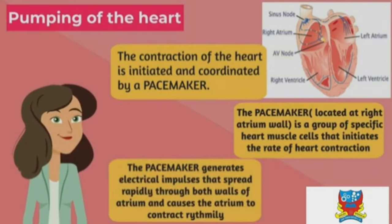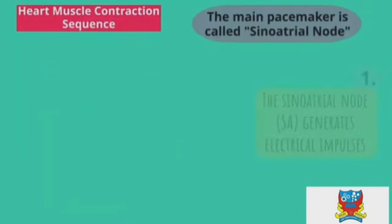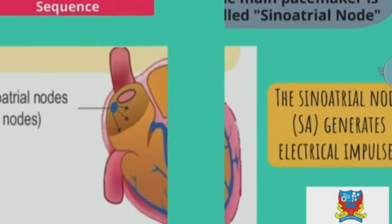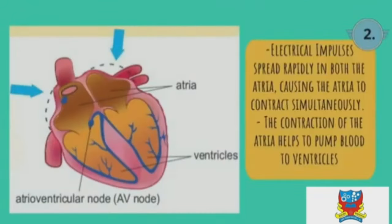The pacemaker generates electrical impulses that spread rapidly through both walls of the atrium, causing the atrium to contract rhythmically. The main pacemaker is called the sinoatrial node (SA node), which generates electrical impulses. These impulses spread rapidly through both atria, causing them to contract simultaneously, helping to pump blood to the ventricles.